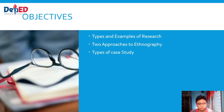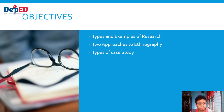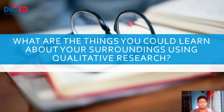We have three objectives for this lesson: discussing different types and examples of research, two approaches to ethnography, and types of case study. The first question is: what are the things you could learn about your surroundings using qualitative research? You may pause this video and answer in the comment section down below.